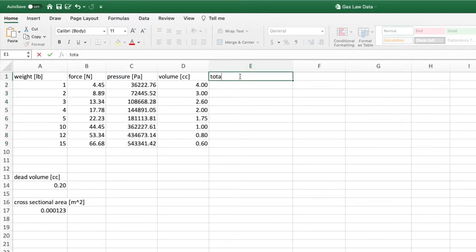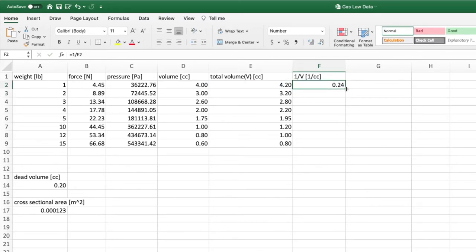Next, we need to convert the volumes to 1 over volumes. First create a column accounting for the dead volume in the syringe. Then create a column for 1 over those volumes. Then convert to SI units, which is 1 over meters cubed.